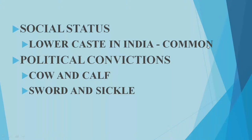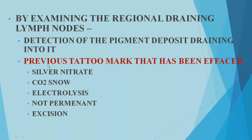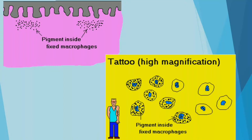Socially, tattoos were earlier associated with low socioeconomic status, but nowadays they have become fashionable. Political convictions may also be tattooed. Previous tattoo marks can be effaced by silver nitrate, carbon dioxide snow, electrolysis — these are not permanent removal methods. Surgical excision or cosmetic surgery can permanently remove tattoos. Eczema and some skin diseases may also cause removal. The pigments fixed in macrophages within the dermis make tattoos permanently visible.